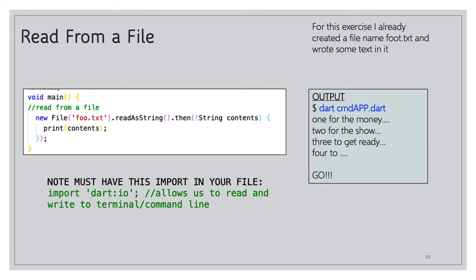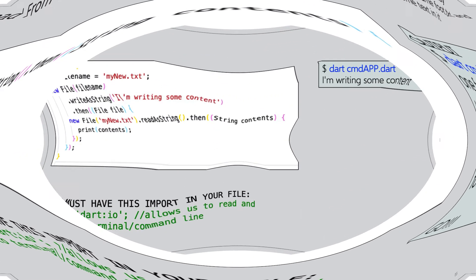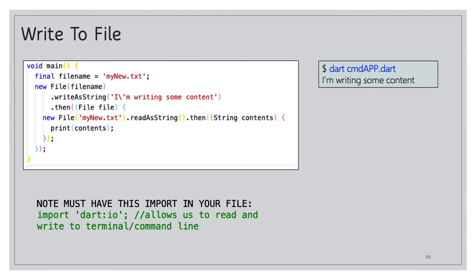Now we'll read from a file. I have a file called `foo.txt` referenced in the code. To make this work, you must import `dart:io`, which allows reading and writing to the terminal and file system. In main, we call `new File('foo.txt').readAsString()` and use the `then` method, passing a `contents` string, then printing it. The output shows exactly what's in the file: 'one for the money, two for the show, three to get ready, four to go.'